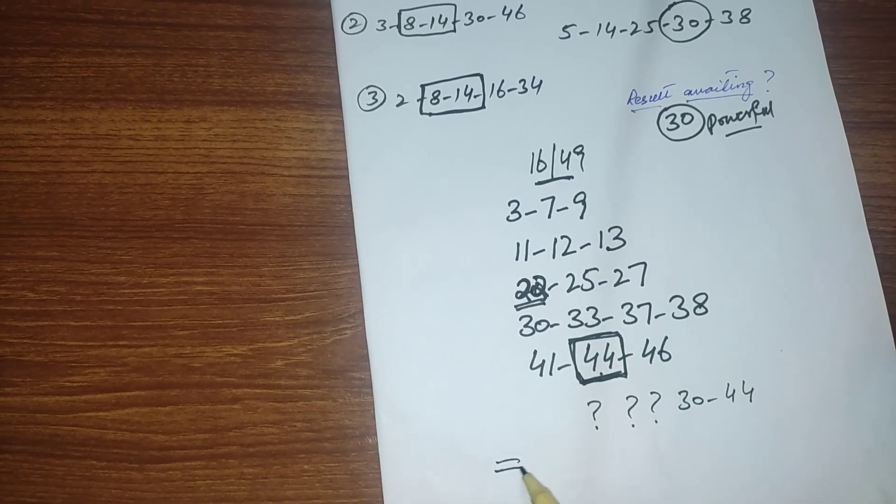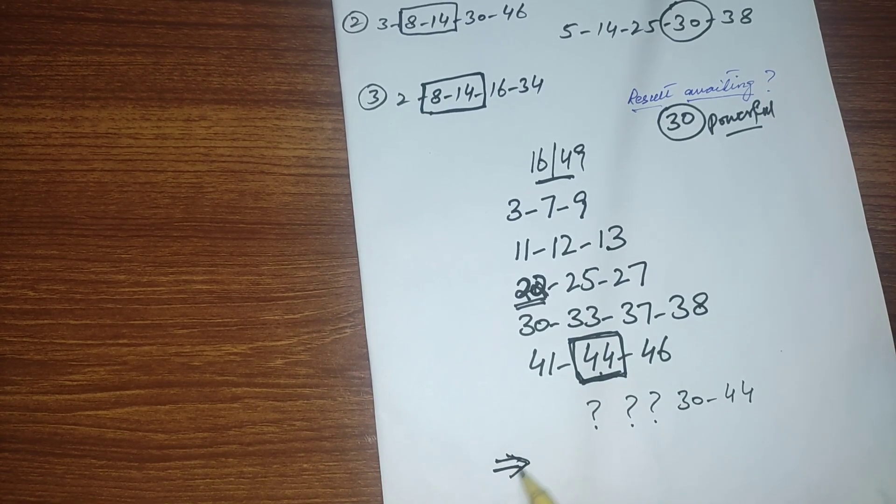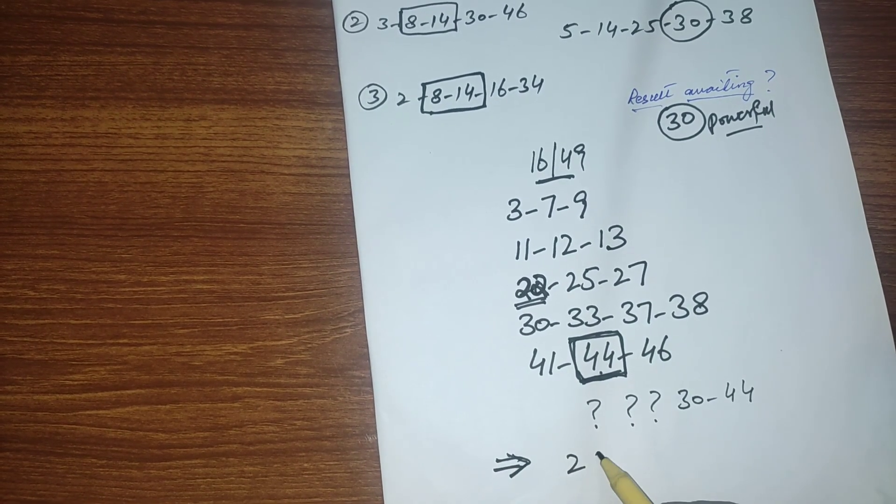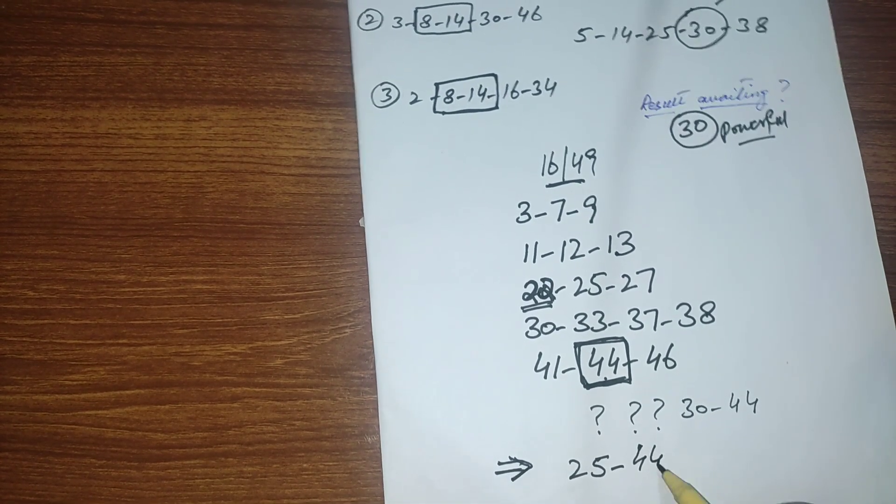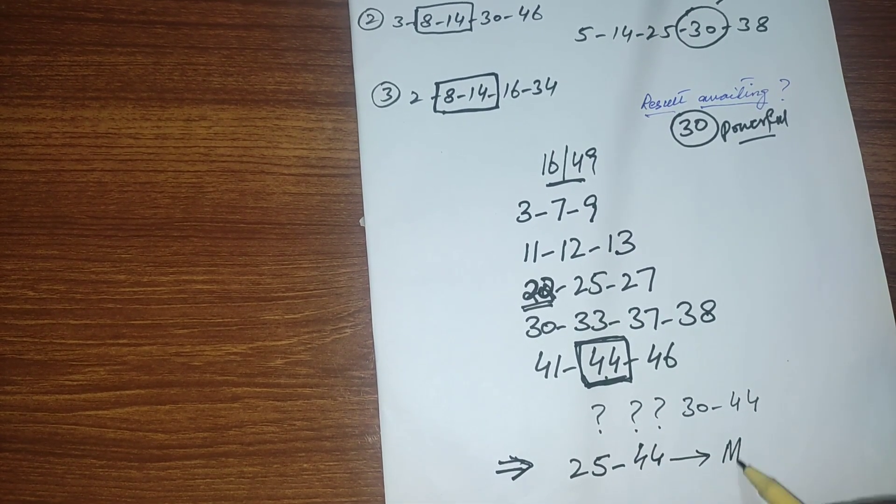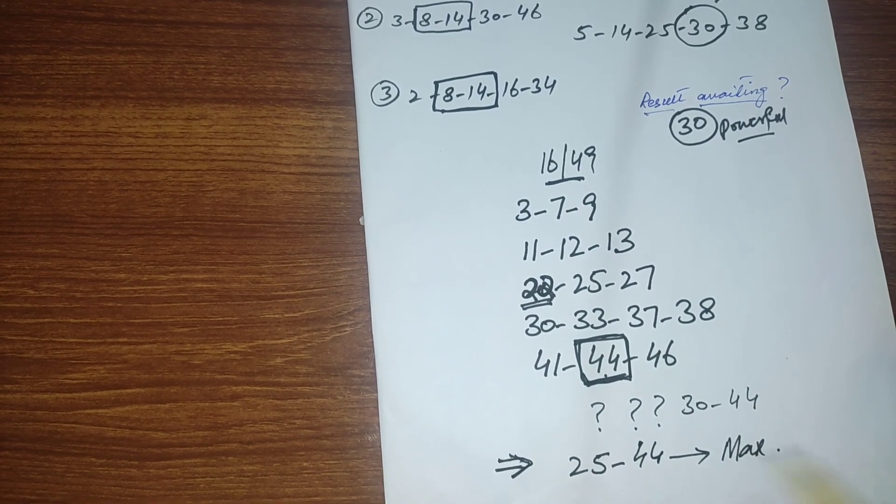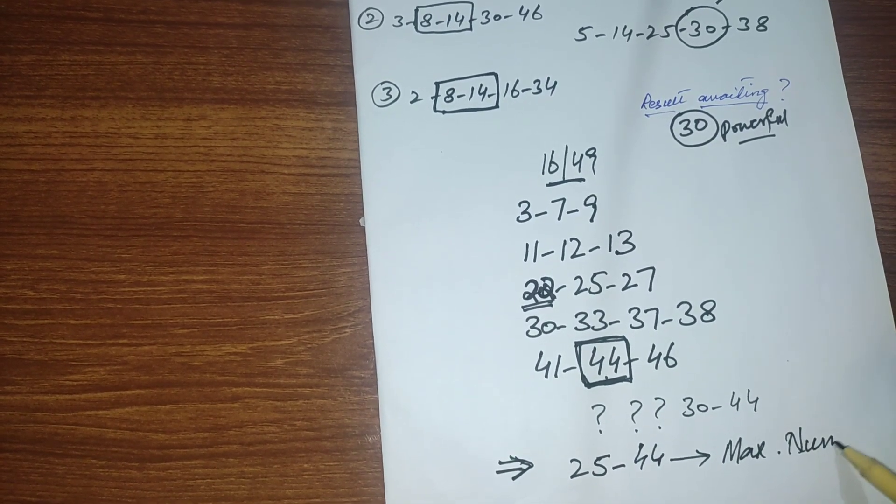Friends, you should select your maximum numbers between 25 to 44. Maximum numbers will come between 25 to 44.